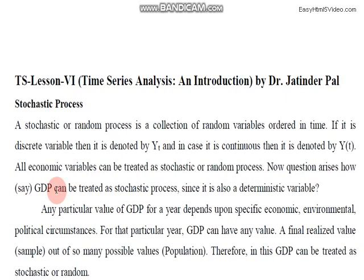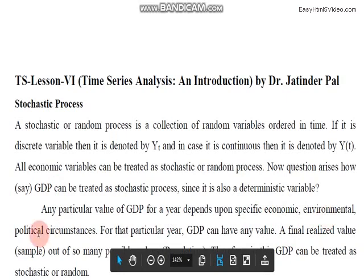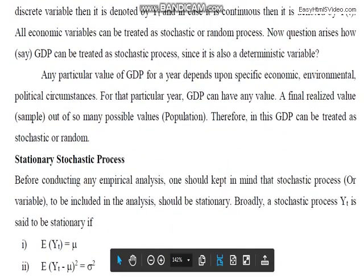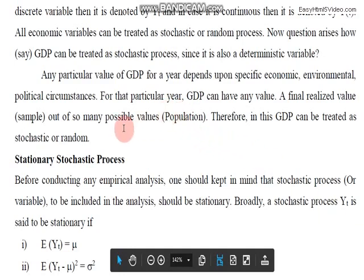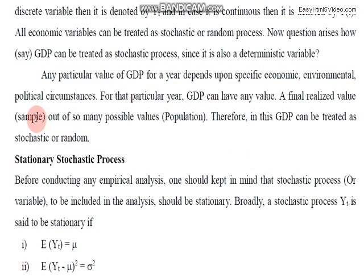In previous lectures we specified GDP as a deterministic variable, but in some sense it can be considered a stochastic process because the value of GDP depends upon many economic, environmental, and political circumstances. GDP can have any value — there are many values which have been predicted and forecasted, but it can assume any value out of those. So you have different possible values and your actual realized sample values, and in that sense you can treat GDP as a stochastic random term.